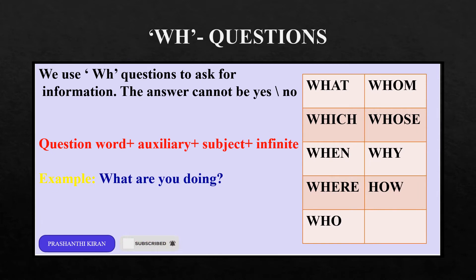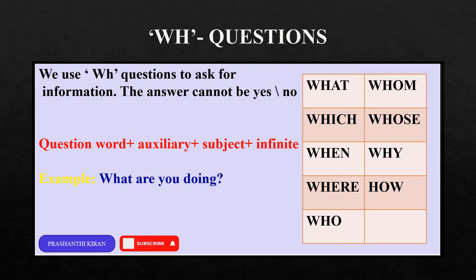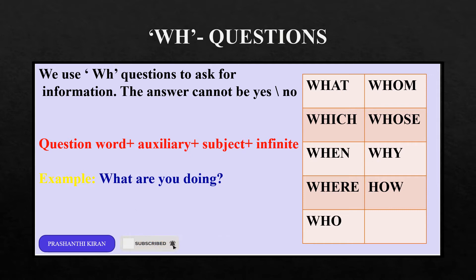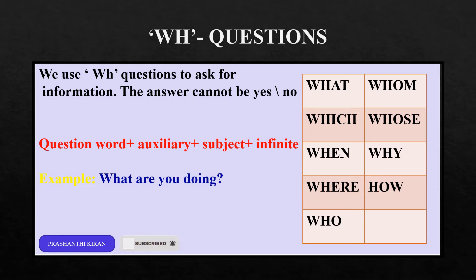Let us learn about WH questions. We use WH questions to ask for information, and the answer for these questions cannot be in yes or no. Let us see some of the WH question words: what, which, when, where, who, whom, whose, why, and how. For example, a WH question: What are you doing?